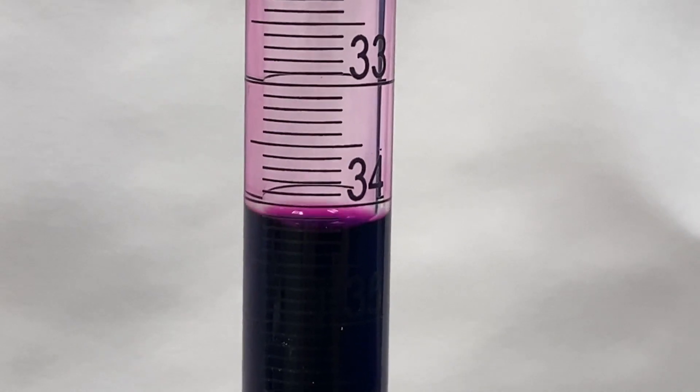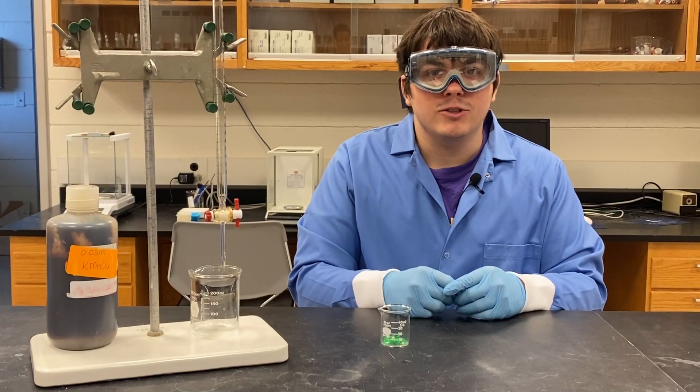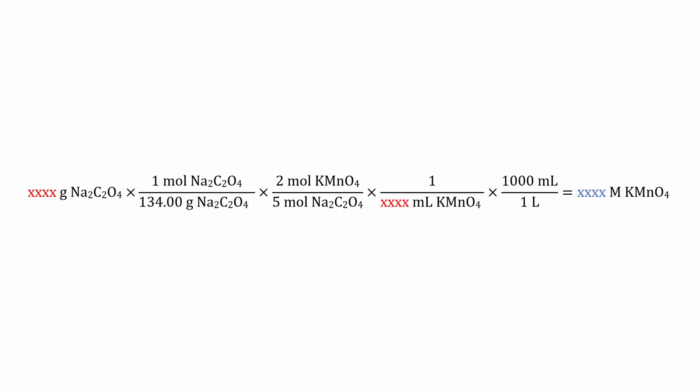After recording the final volume, the concentration of permanganate can be calculated. This should be done right away so you can share the value with your group. Plug in your values to this example calculation to quickly determine your permanganate concentration. Make sure to share this value with your group members afterwards.